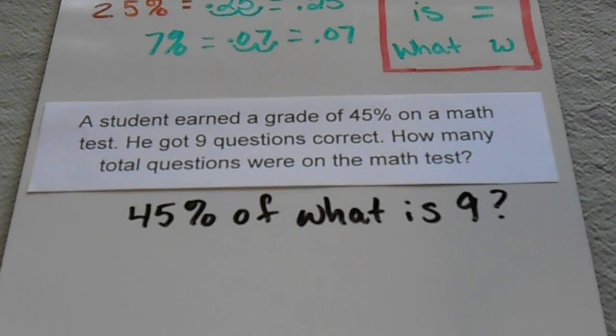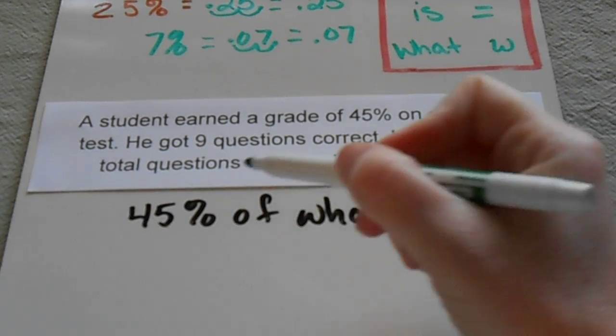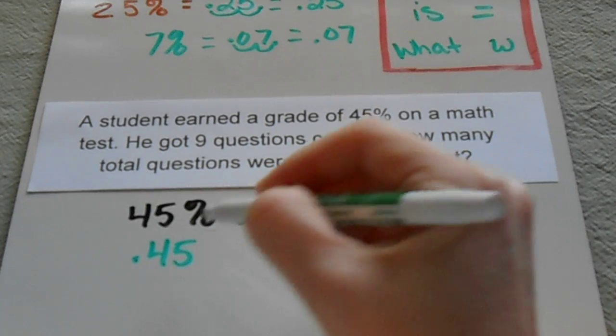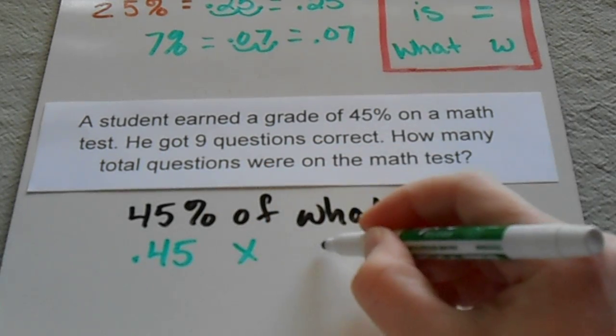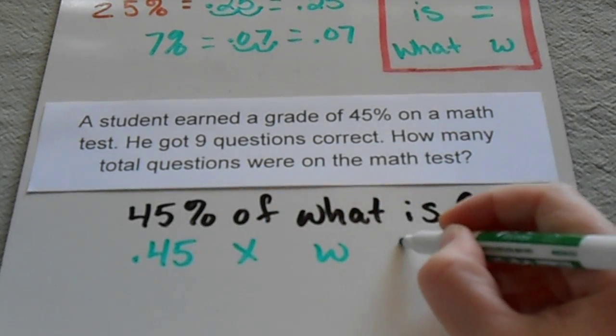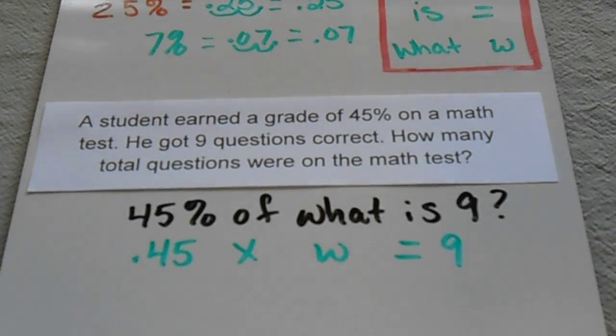So let's translate those into our math terms. Again, with a percent, I'm going to turn it into a decimal so I can work with it. 'Of' is times, 'what' is my variable, 'is' means equals, and then nine.